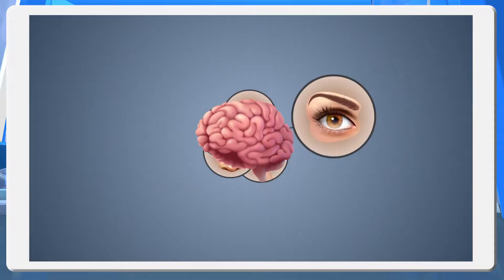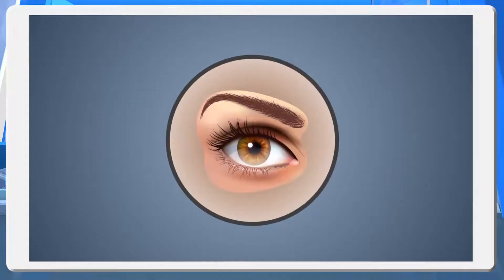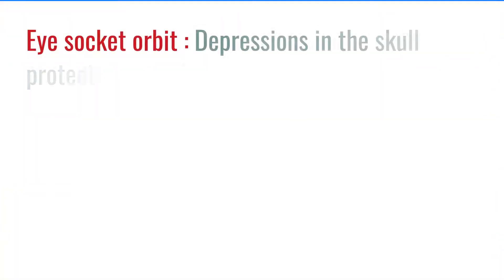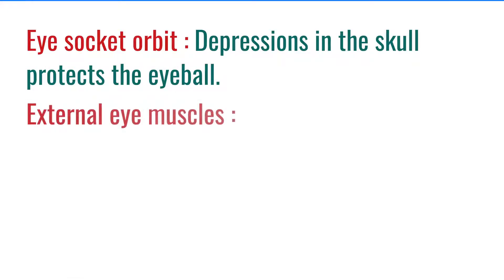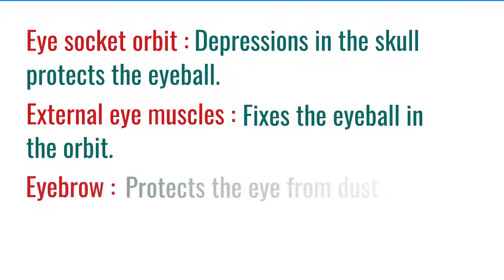Eye is a major sense organ that helps to identify different colors of a human being. It helps the brain to evoke sensation. Then let's discuss in detail how are the eyes protected. Eye socket orbit: Depressions in the skull protects the eyeball. External eye muscles: Fixes the eyeball in the orbit. Eyebrow: Protects the eye from dust and sweat.